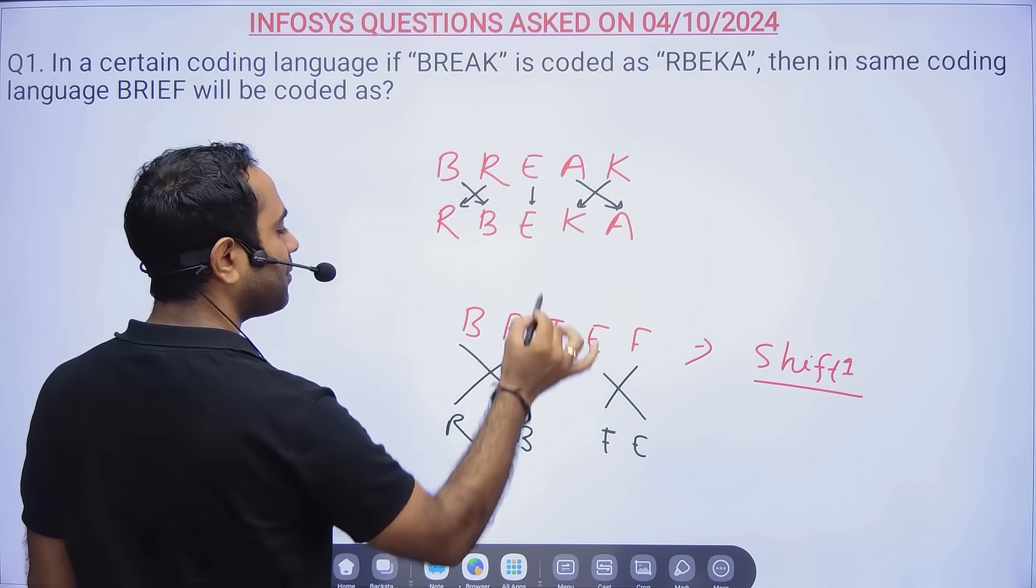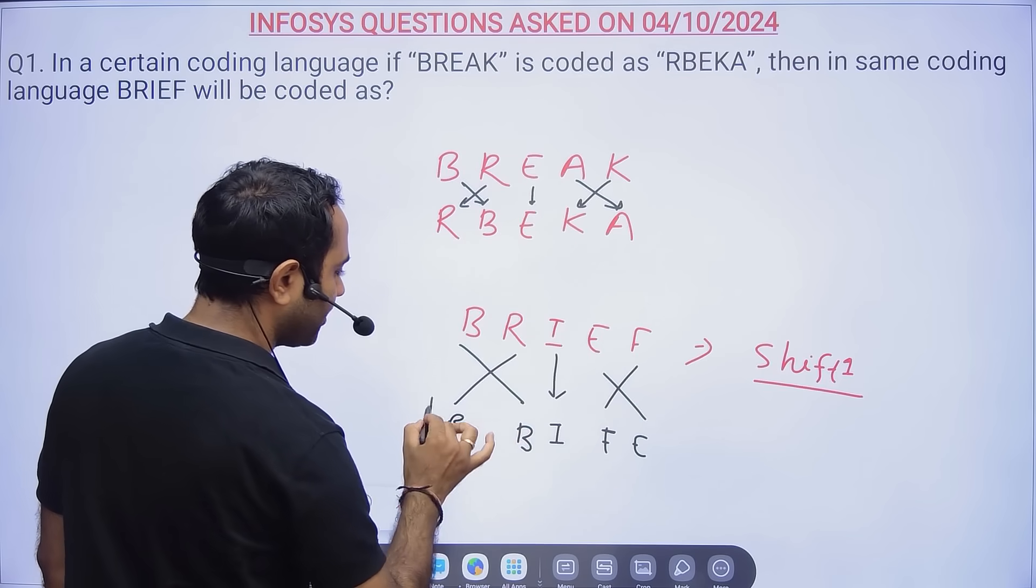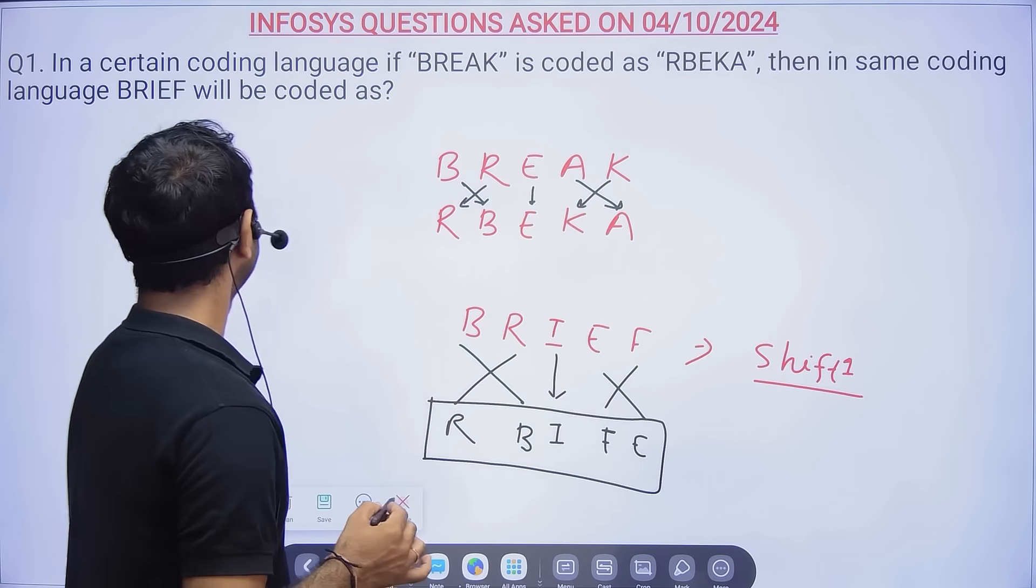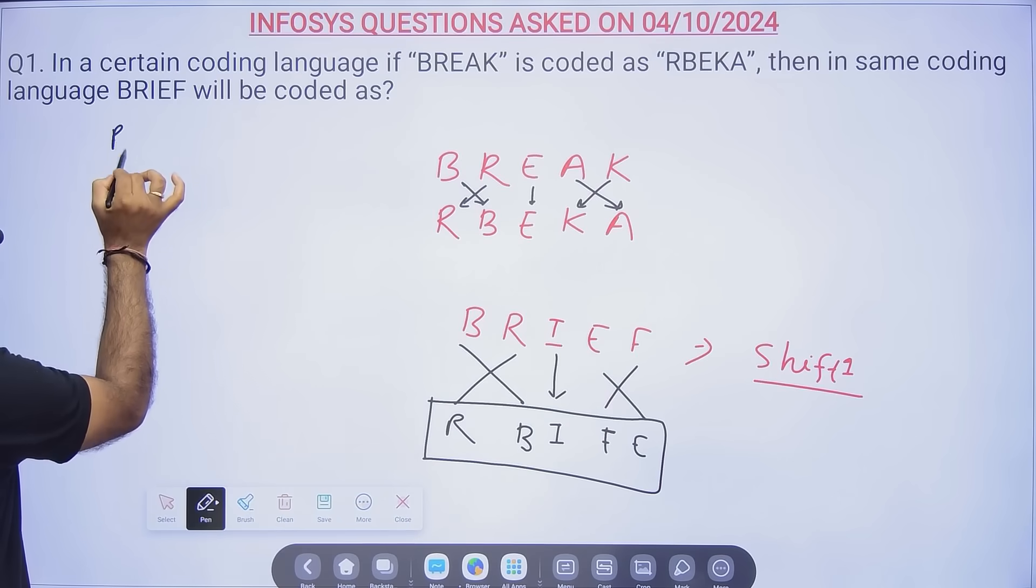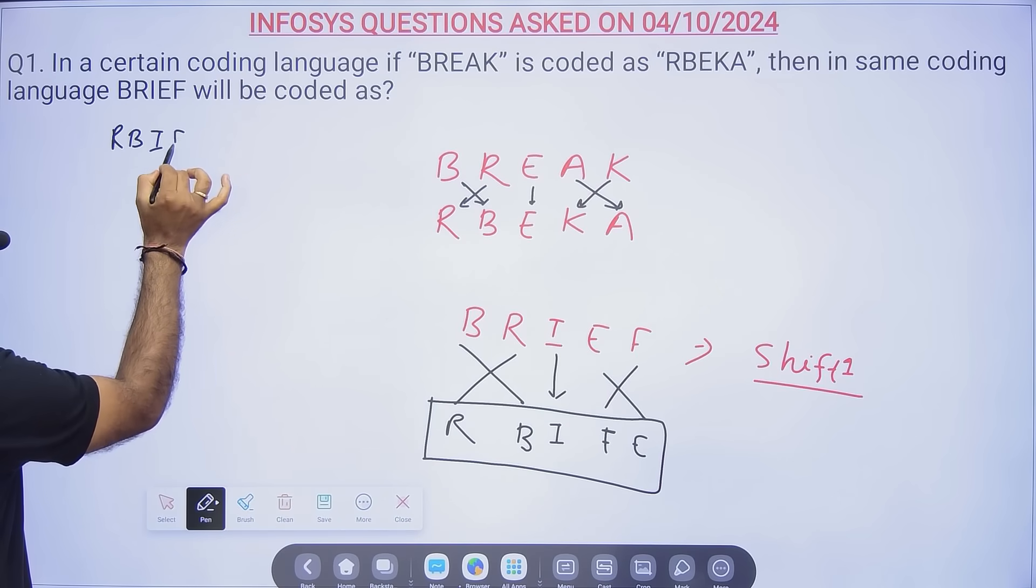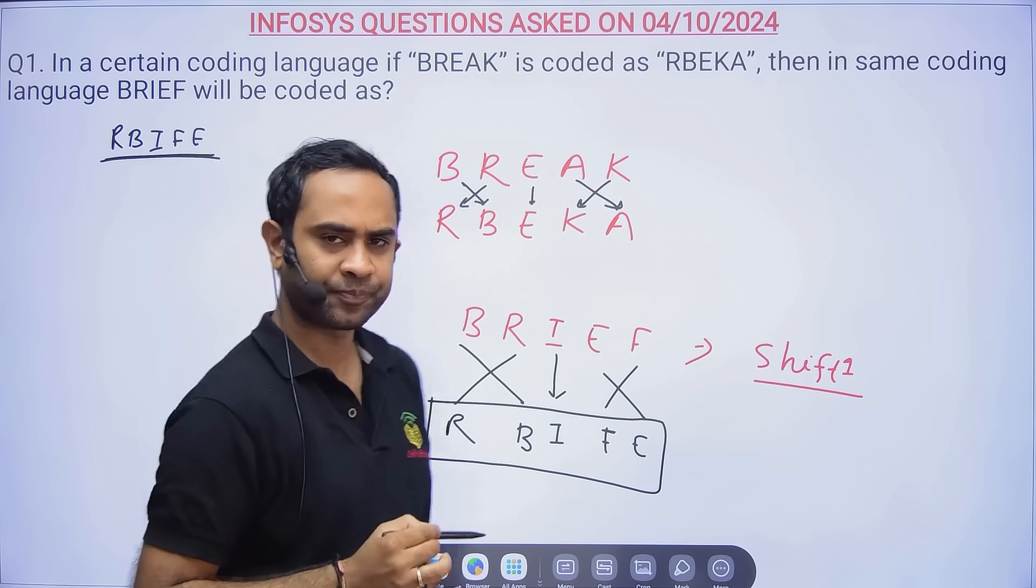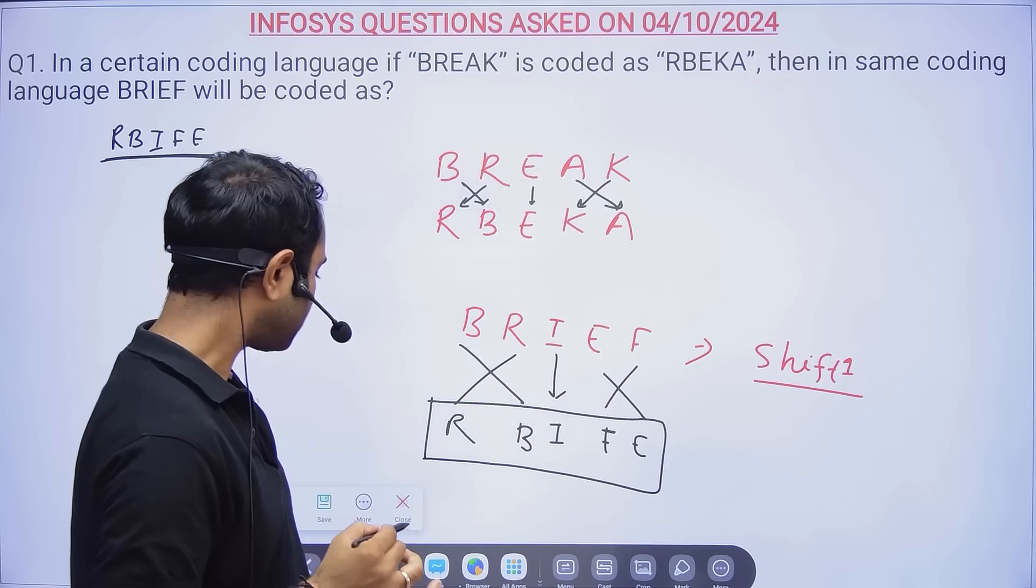Here the same letter is repeated. So BRIEF will be coded as RBFIE. This was a simple question from coding and decoding.